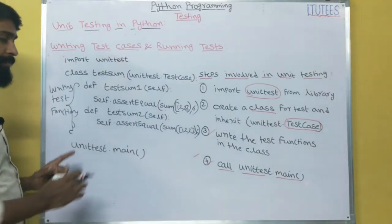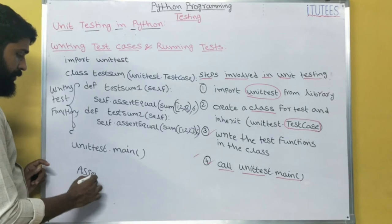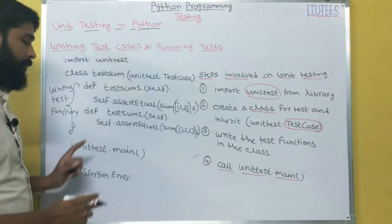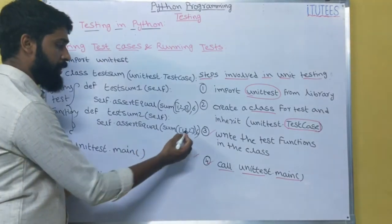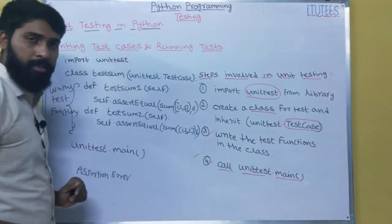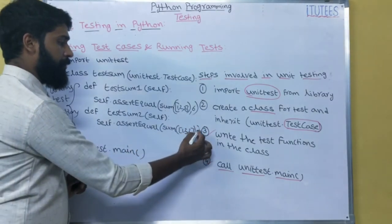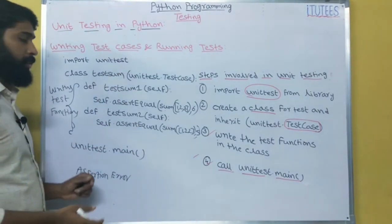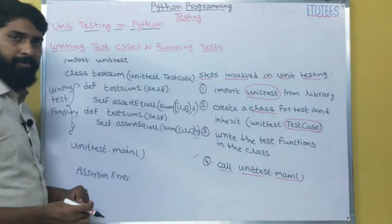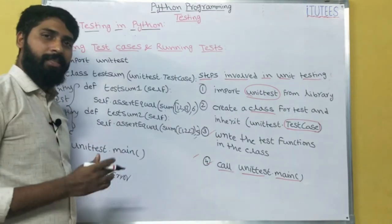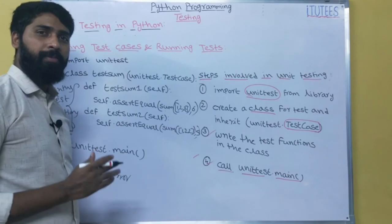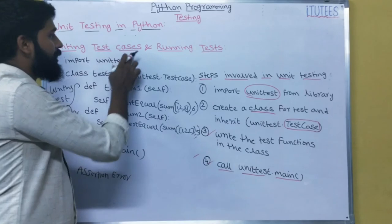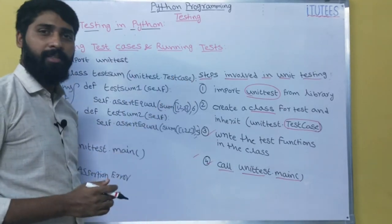When we run, it returns one error — the error is Assertion Error. So how can we overcome this Assertion Error? By making the expected value 3 to match, or by making the sum equal to 5. In both cases, if all the assertions are true then you don't get any error. We can see all these in our practical session. This is about unit testing in Python — I hope you all understand what unit testing in Python is, and how to write test cases and run them.